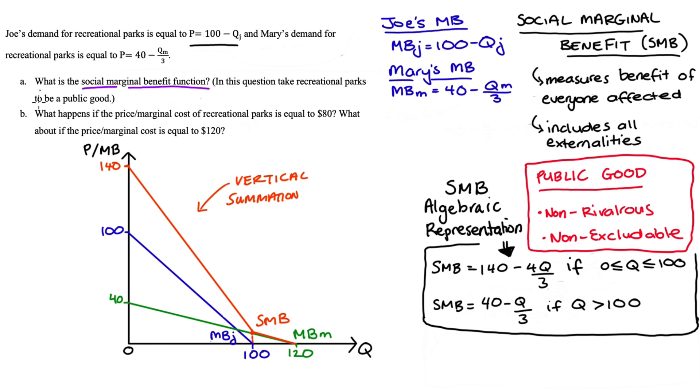Now in part B we are asked what happens if the price/marginal cost of recreational parks is equal to $80? What about if the price/marginal cost is equal to $120?